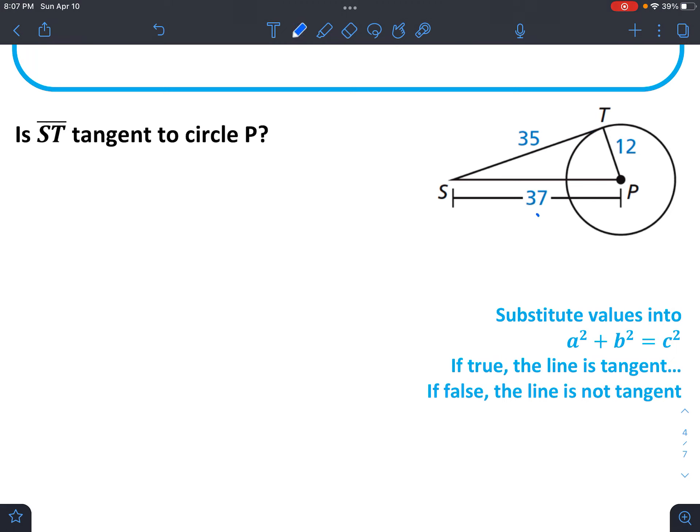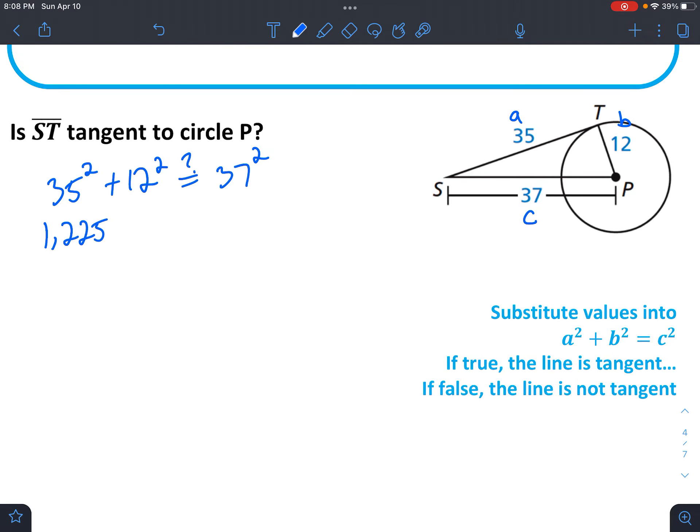And remember, C is always going to be the largest. So we'll say this is C, and this is A and B. It doesn't matter which one's A and which one's B, as long as C is the largest. So we're going to say, let's just see if 35 squared plus 12 squared, does it equal 37 squared? Punch this into your calculator and you get 1225, plus 144. And we're still wondering if that equals, once you square 37, you get 1369. Add the two on the left together and you get 1369.